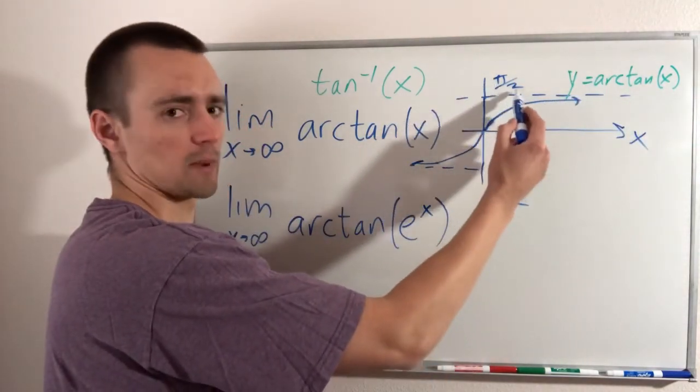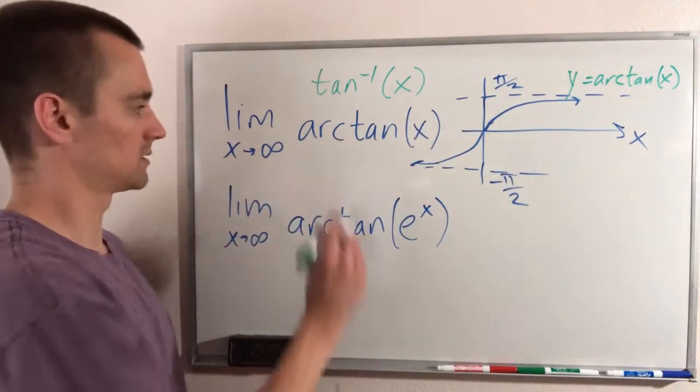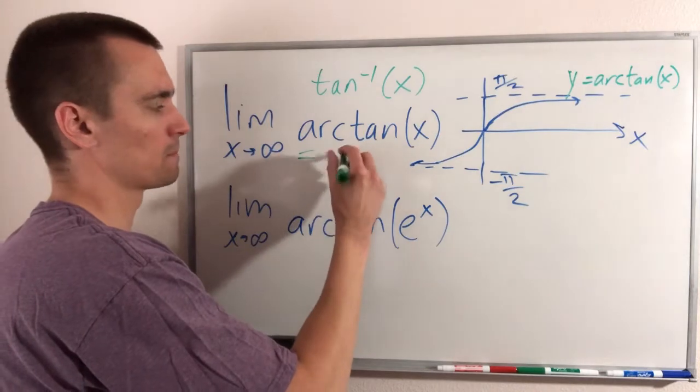Well, it's just going to get closer and closer to pi over 2. So this limit as x goes to infinity of arctan x is just going to be pi over 2.